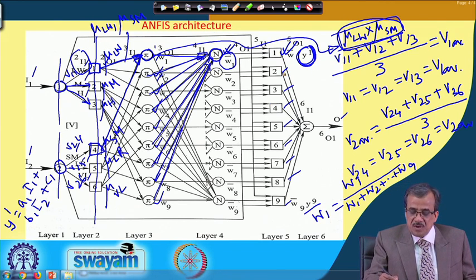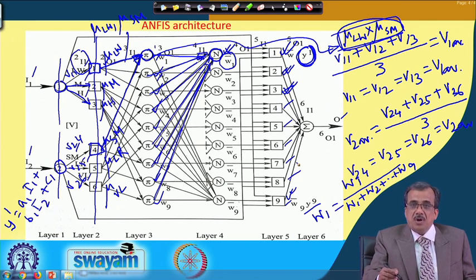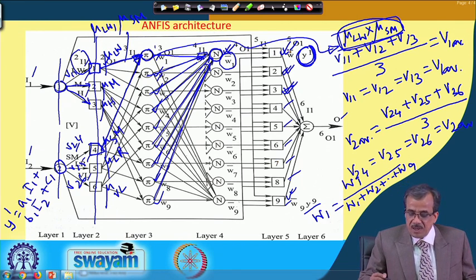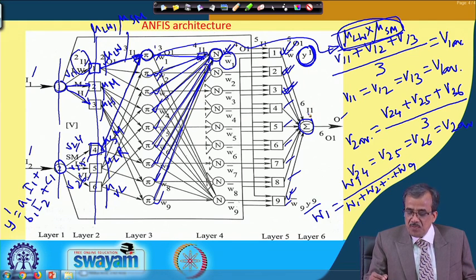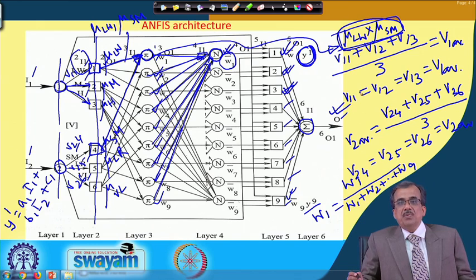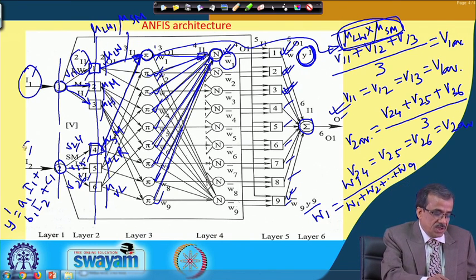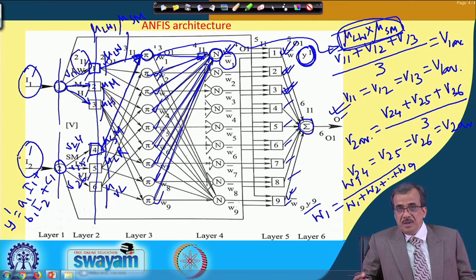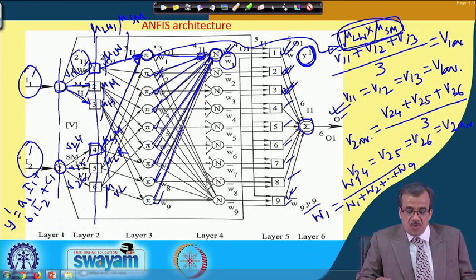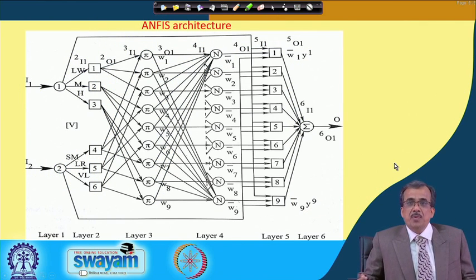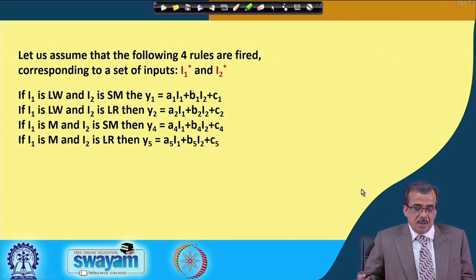Similarly, we find out y2, y3, y4, y5, y6, y7, y8, and y9. We then multiply the normalized firing strength w_bar with the respective yi. The output of the first neuron on the fifth layer is w1_bar multiplied by y1, the second is w2_bar multiplied by y2, and so on. On the sixth layer, we sum them all up to find out the final output of the network for one set of input parameters i1 and i2. These things are written stepwise in the next slide.